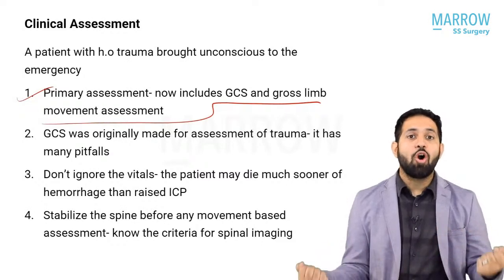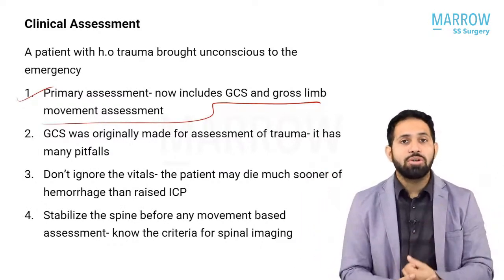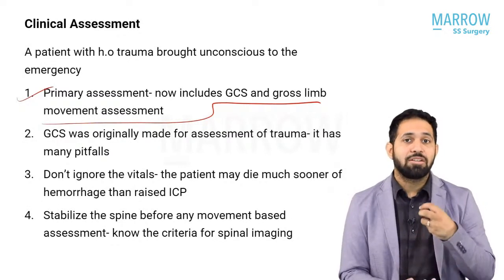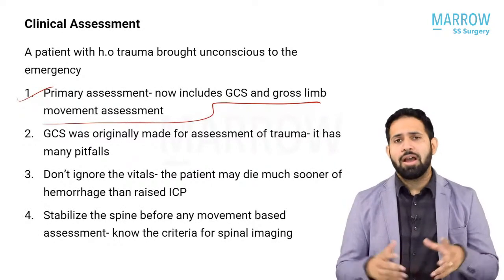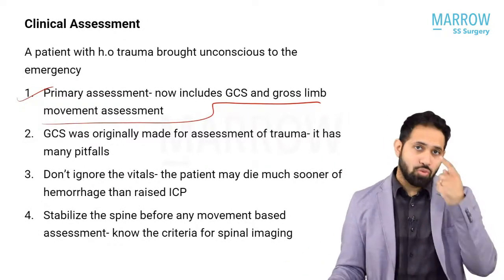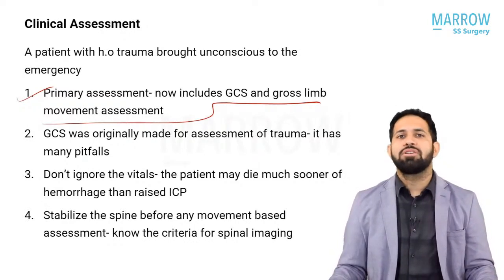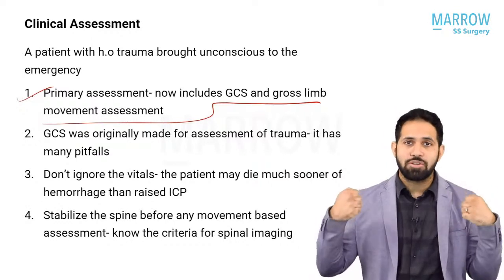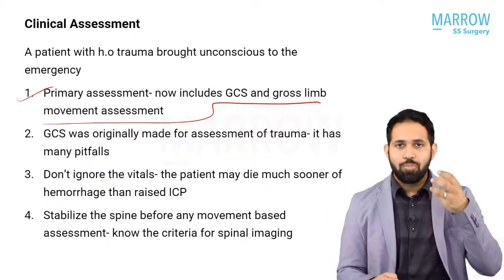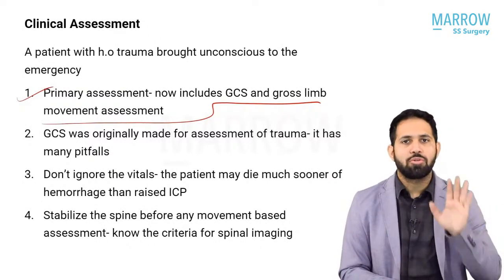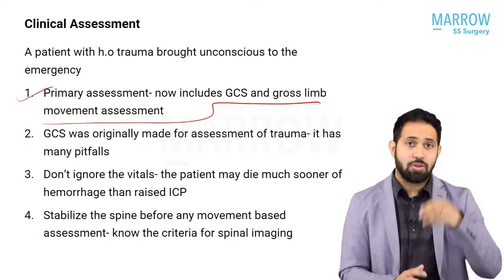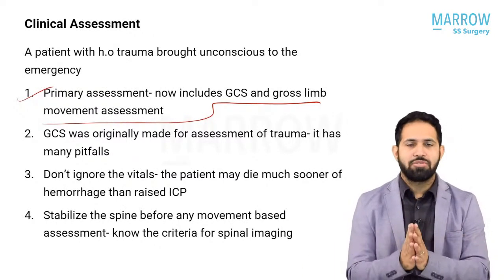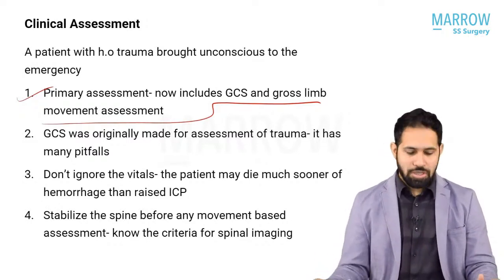If the legs become flexed it is automatically M4, not M3. In M2 and M3 the knees are always extended and externally rotated. M4 is normal flexion without localization, also described as withdrawal. M5 is localization to the stimulus. M6 is completely following commands. That is the whole GCS — I've summarized it along with its pitfalls.